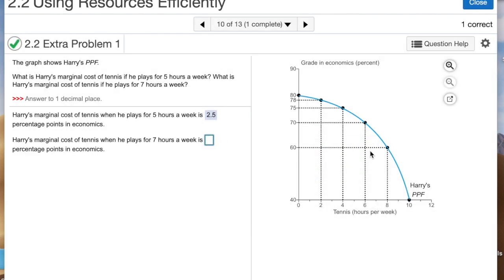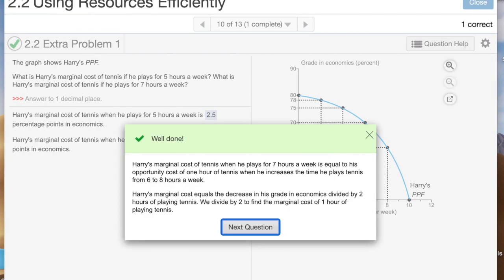Now we need to do the same thing for seven percent, which falls in between the six and eight. At six hours of tennis, he makes a seventy percent in the class. If he extends by two hours to eight, his grade drops to a sixty percent. That's a difference of ten percent. Again, we want to know what it is for a one-hour increase in tennis, so we divide the ten by two to get five percent change in his grade.